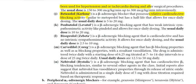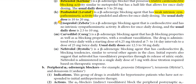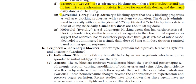Betaxolol is a beta blocker that possesses relative cardioselectivity, similar to metoprolol, but has a half-life that allows once-daily dosing. The usual daily dose is 5 to 20 mg. Penbutolol is a beta blocker with weak intrinsic sympathomimetic activity, similar to pindolol, and allows once-daily dosing. The usual daily dose is 10 to 20 mg. Bisoprolol is a cardioselective beta blocker with no intrinsic sympathomimetic activity and allows once-daily dosing. The usual daily dose is 2.5 to 10 mg.